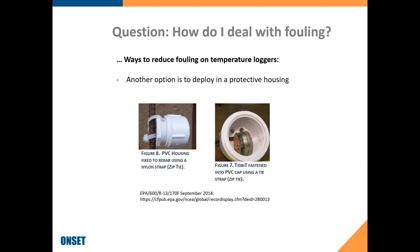Another way of reducing fouling and providing protection is to put the logger in a protective housing. This is from an EPA guide where they use PVC housings that they make — they either glue them to rocks or mount them to metal stakes — and they can put loggers such as our tidbit loggers inside them. That will reduce fouling and provide some protection. Make it easy to access the loggers by screwing it up to access them for data offload.